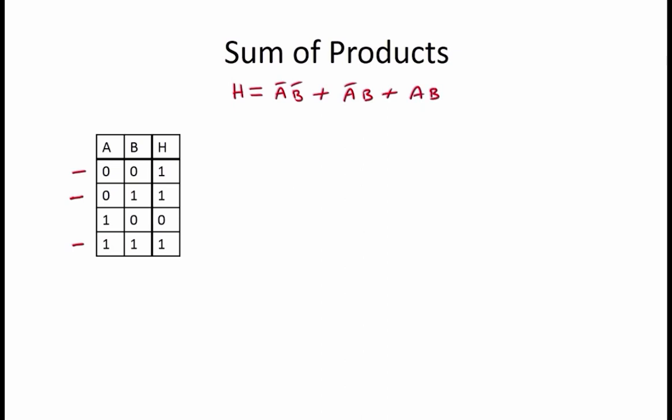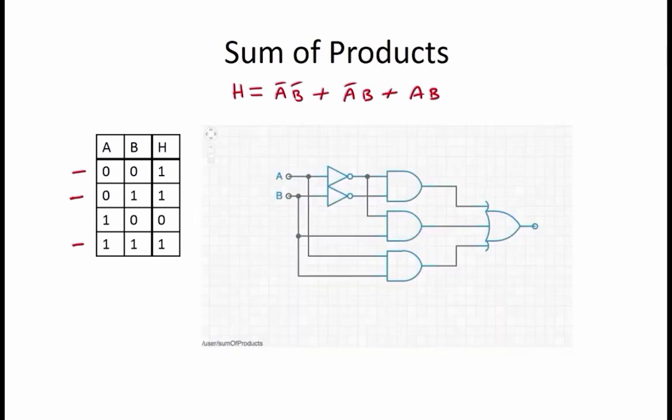This notation is called the sum of products notation. Any sum of products can be converted into a simple gate representation of the function using only inverters, AND and OR gates by having one large OR gate that receives as input one AND gate per product term. Inverters are used as needed to complement the inputs to the AND gates.